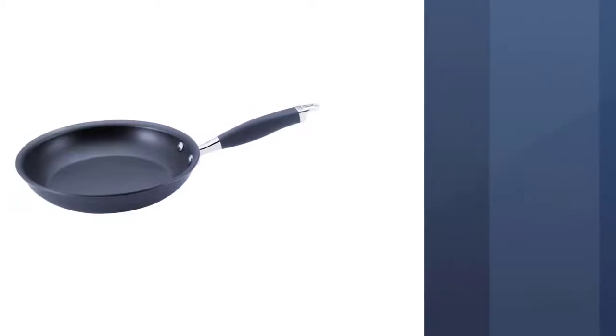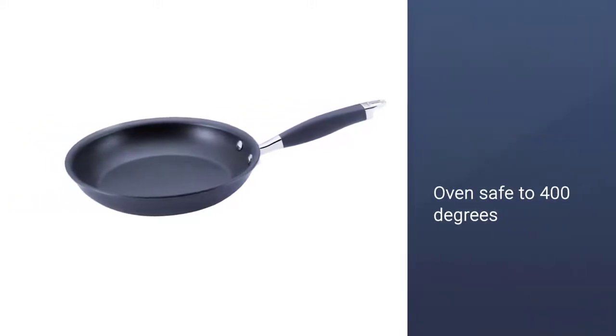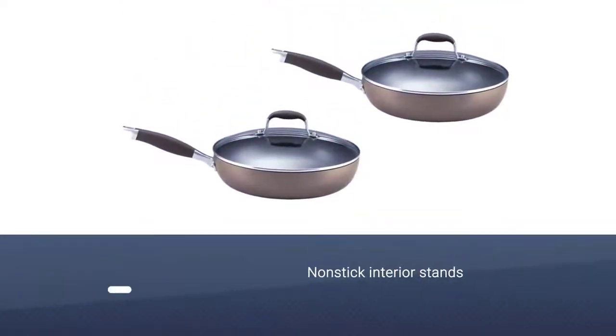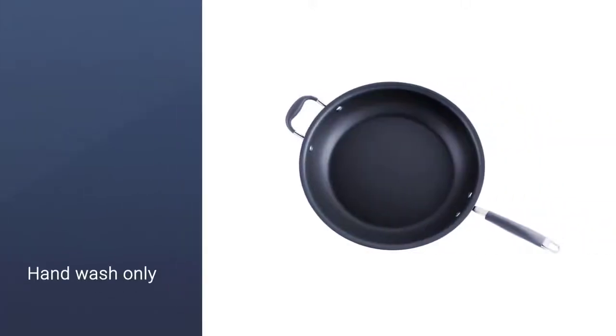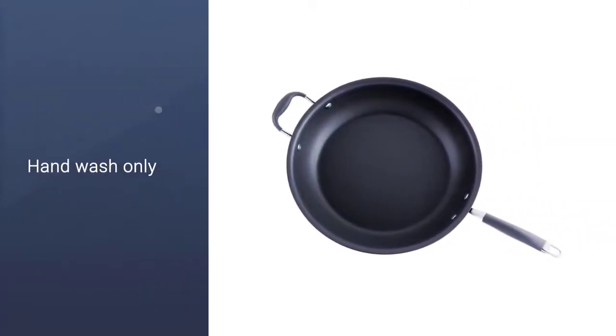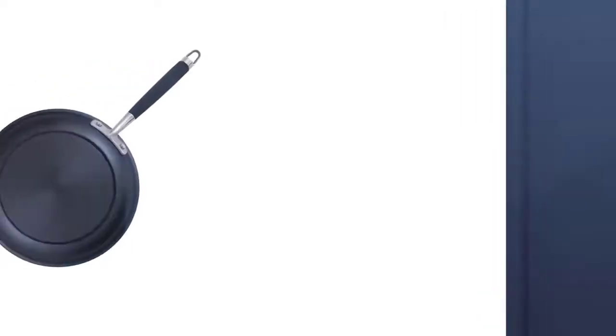The exterior of this pan is an attractive bronze color and the comfortable grip on the riveted handle is color-coordinated. The heavy aluminum construction provides even heating and the pan is oven-safe to 400 degrees. The glass lid holds in steam and heat and lets you check the food while it cooks.